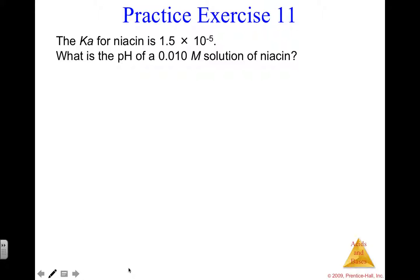Practice exercise 11 is nearly identical to practice exercise 10, just different numbers. You're given a Ka for niacin of 1.5×10⁻⁵ — I know niacin is an acid because you're given a Ka value; the only time you have a Ka is for a weak acid. You're asked to solve for the pH of a 0.010 molar solution of niacin. I'll get you started: given Ka, asked to find pH, and given an initial acid molarity — that's a weak acid ICE box problem.